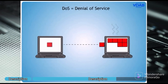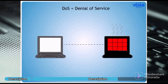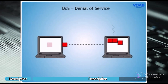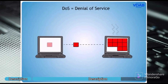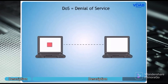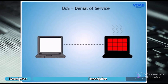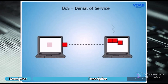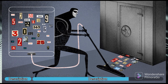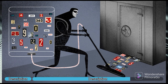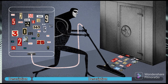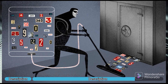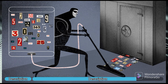4. Denial of service attack. A denial of service attack is an attack meant to shut down a machine or network, making it inaccessible to its intended users. 5. Harvesting — where a person or program collects login and password information from a legitimate user to illegally gain access to other accounts.